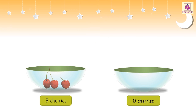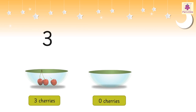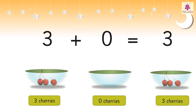So here, three plus zero is equal to three. Thus, there are three cherries in all. Thus, it can be concluded that the sum of any number and zero is the number itself.